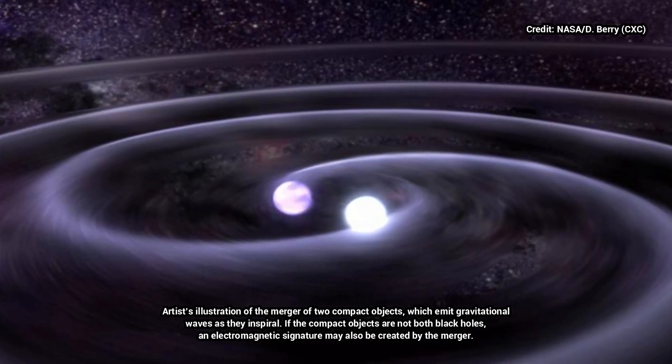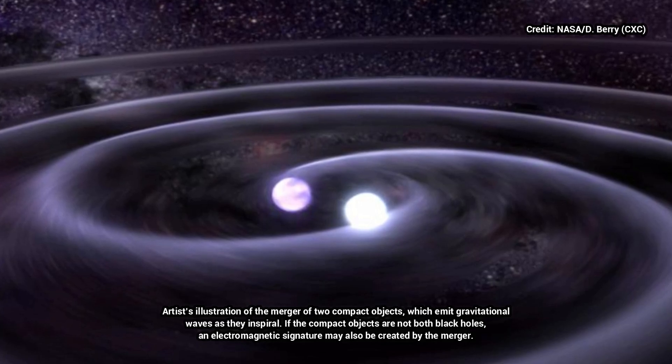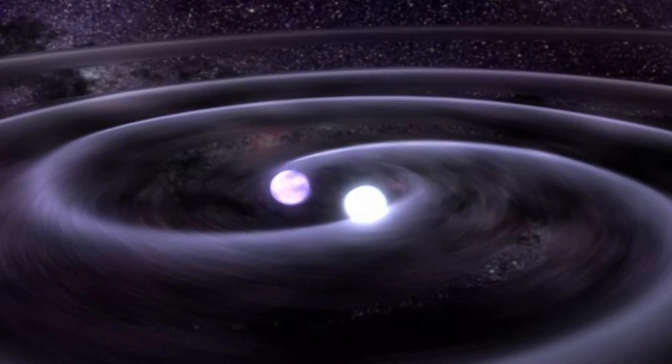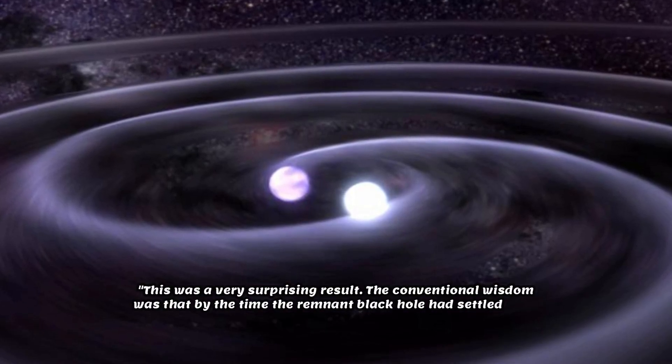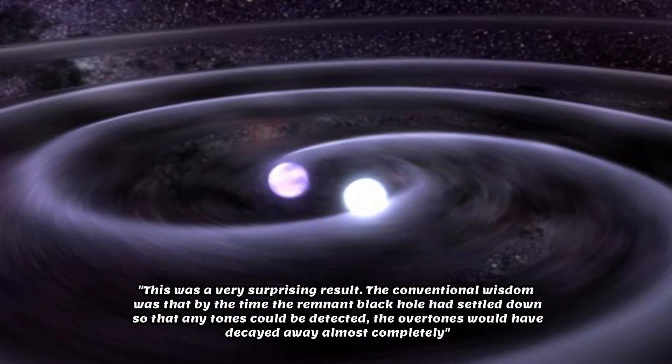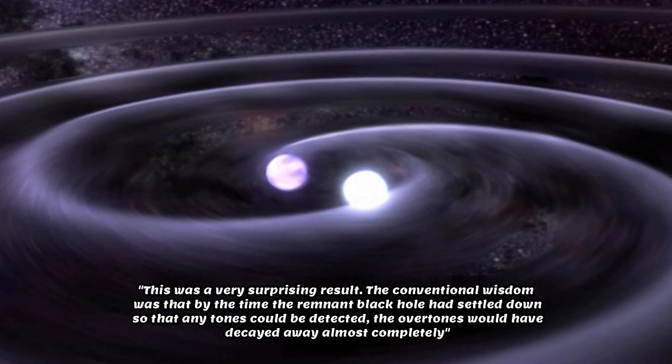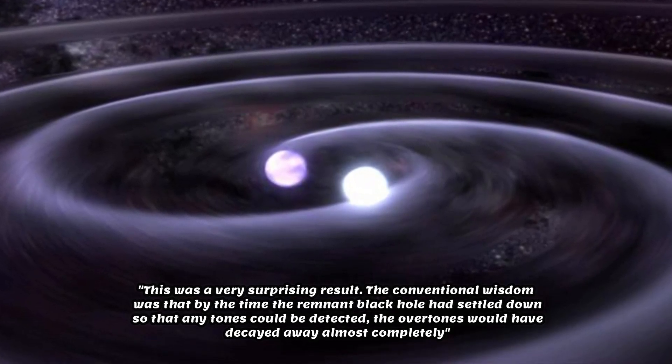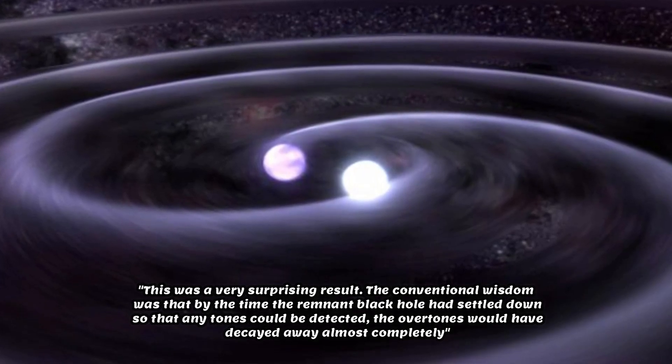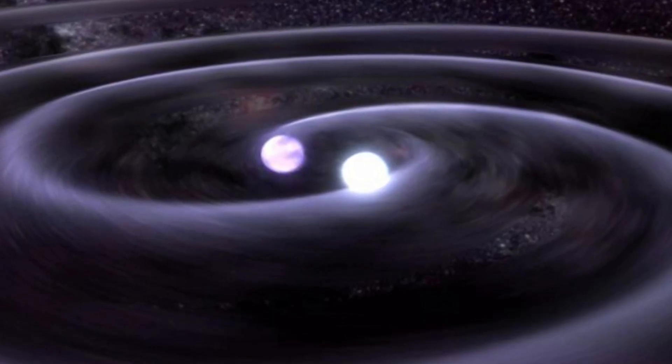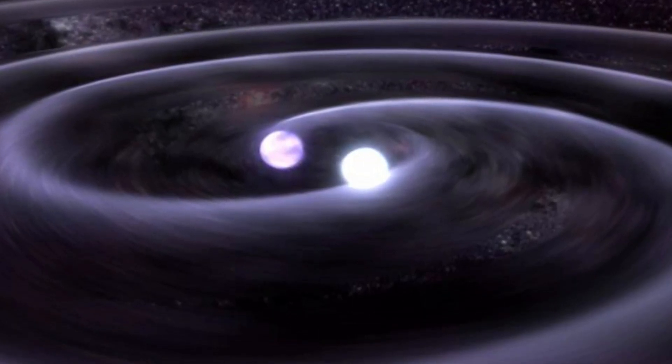Giesler found that the overtones, which are loud but short-lived, are present in an earlier phase of the ring-down than previously had been realized. This was a very surprising result. The conventional wisdom was that by the time the remnant black hole had settled down so that any tones could be detected, the overtones would have decayed away almost completely, says Teukolsky, who is also a professor of physics at Cornell University.